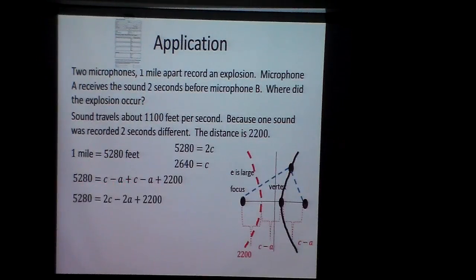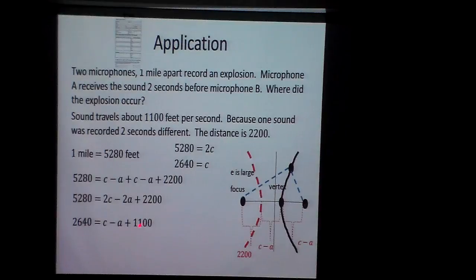I can add two C's together, add the negative two A's together, and have 2,200. What's common to all of these? The number two. Let's divide it all by two. Now then, let's also do this here. Let's subtract 1,100 from the 2,640. So I know that 1,540 is equal to C minus A.